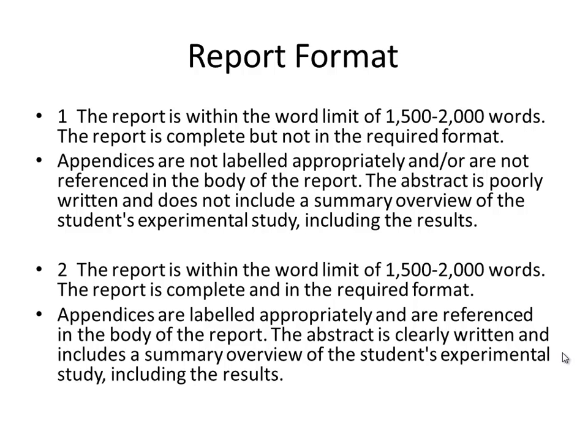For the report format, this is probably the easiest criterion to get points on. Simply be within the word limit — between 1,500 and 2,000 words — and that is how you get the mark for it. Label the appendices appropriately, which is another easy way to get marks. The abstract is also included in this section and is just a summary of the whole experiment, written once everything else is done. The report should also include a table of contents, making it a clear and easy-to-read IA.